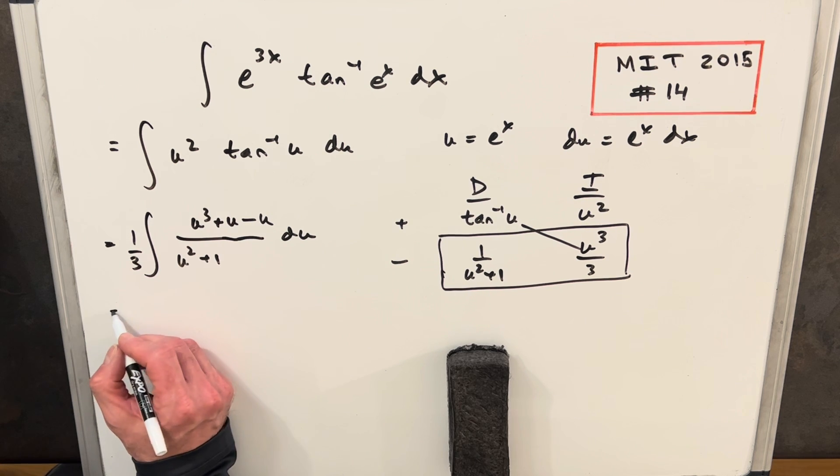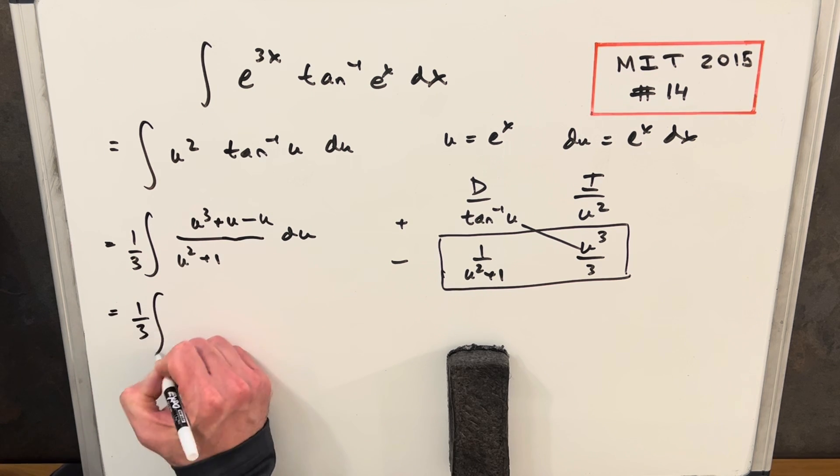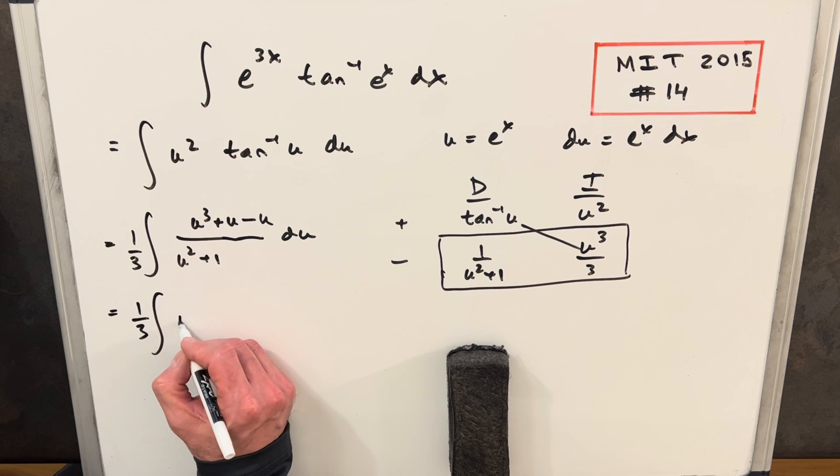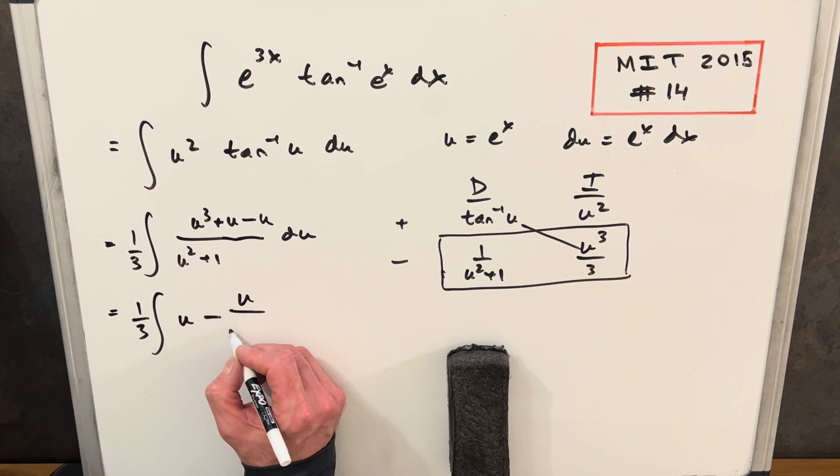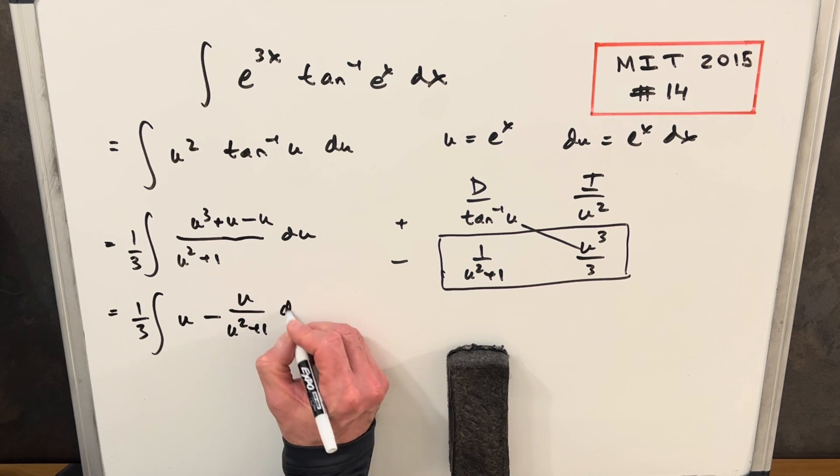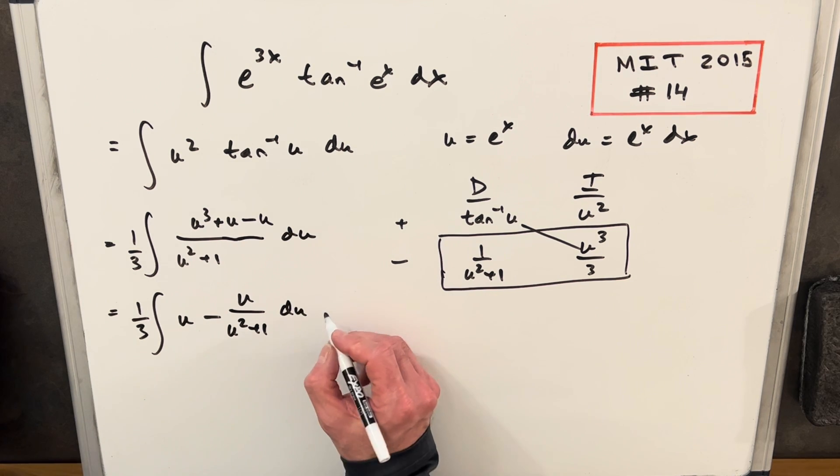So if we do this, we can—this will allow us to break it up nicely. We'll have 1 third, and then our first piece, this division, is just going to be a u. Then we're going to have minus u over u squared plus 1. Then I can just break this into two integrals.